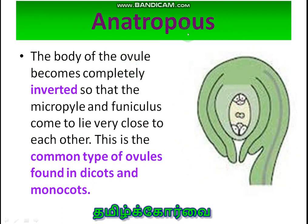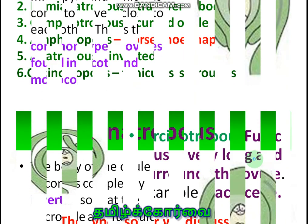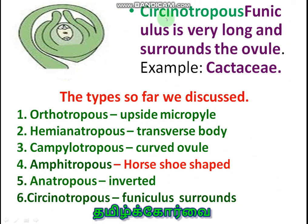Anatropous ovule: the ovule is still more curved in such a way that the funiculus and the body of the ovule are adjacent to each other — this is the inverted ovule. This is the most common type of ovule found in dicots and monocots. Micropyle and funiculus come to lie very close to each other.